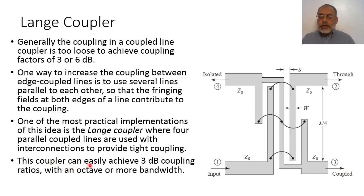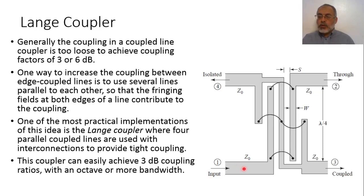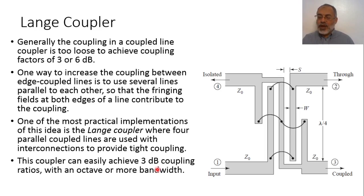This coupler can easily achieve a 3 dB coupling ratio. By using this configuration for the coupling mechanism, we can increase the coupling coefficient up to 3 dB. In a conventional coupled line directional coupler, the maximum coupling coefficient which can be achieved is only 10 dB, meaning only 0.1 of the incident power passes to the coupled port. But in the Lange coupler, we can achieve 3 dB coupling, meaning half of the incident power can be coupled to the coupled port. Note that the coupling coefficient is expressed as minus 3 dB or minus 10 dB, so minus 3 dB represents stronger coupling than minus 10 dB.